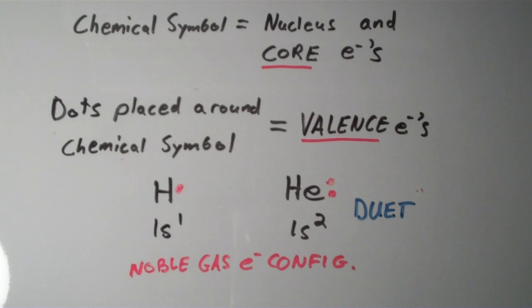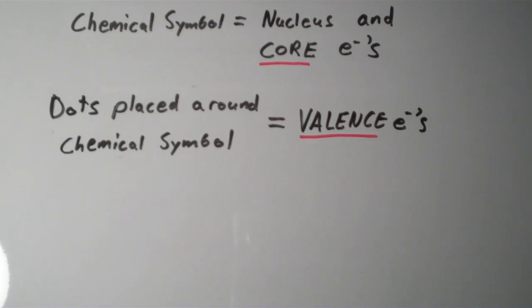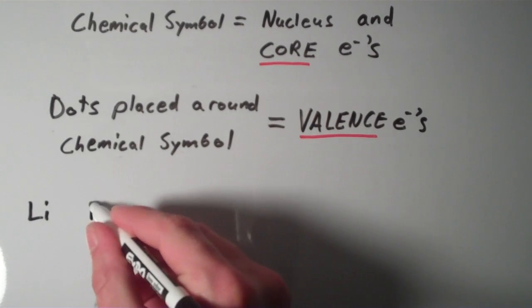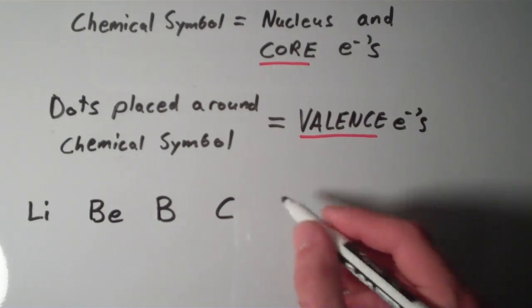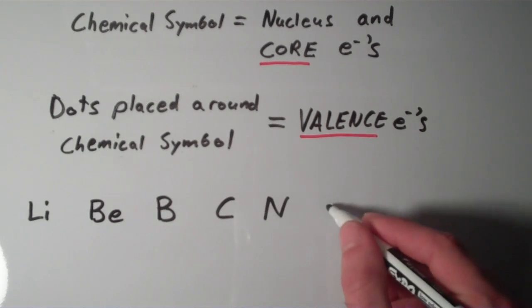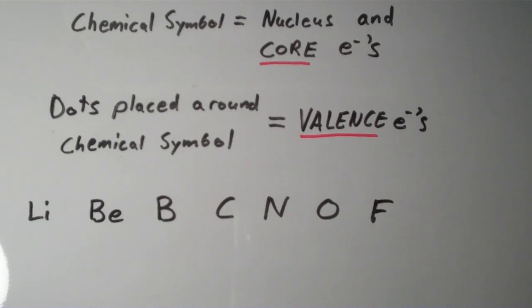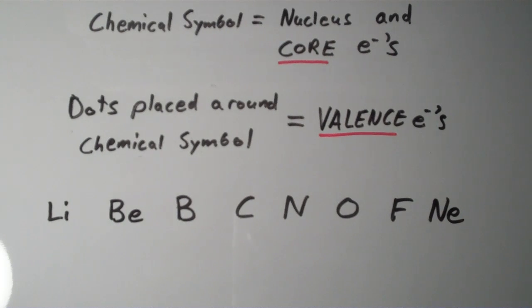Now let's get into the period 2 elements and see if we can draw Lewis structures for all those as well. So in period 2, what do we have? We start with lithium, and then beryllium, and then boron, and then carbon, and then nitrogen, and then oxygen, and then fluorine, and then neon. I almost forgot it. That would have been pitiful. Anyway, these are the period 2 elements.